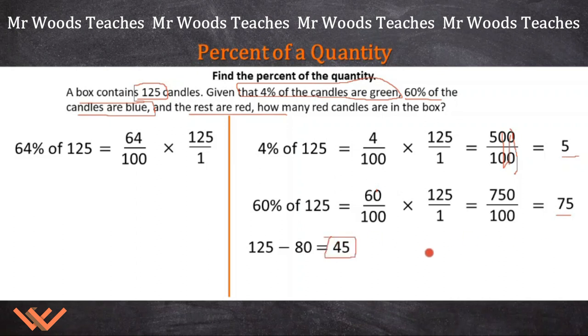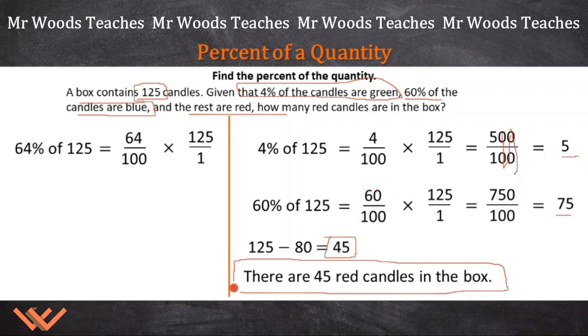So are we done yet? We have this number 45. Not necessarily. Typically with a word problem, you have to write out your answer. Here we go. There are 45 red candles in the box. And if I was you, I would also circle my answer so that the teacher knows exactly where to go.